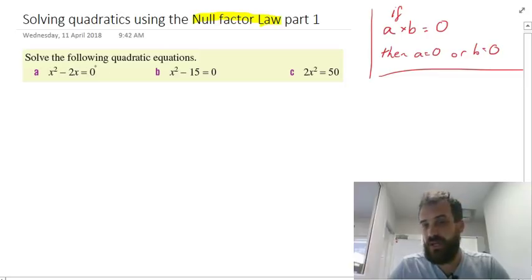Solve the following. That just means find out what x is. So x² - 2x = 0. Now there's an x here and there's an x here. This is an x² term and this is an x term. We can factorize that.